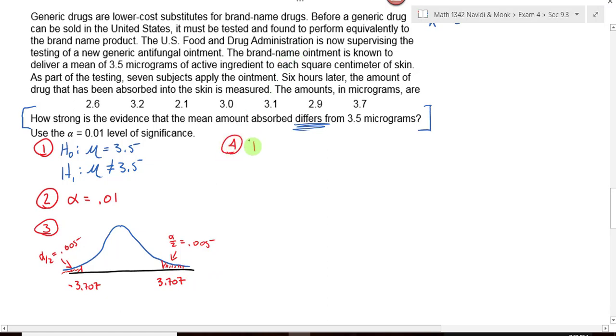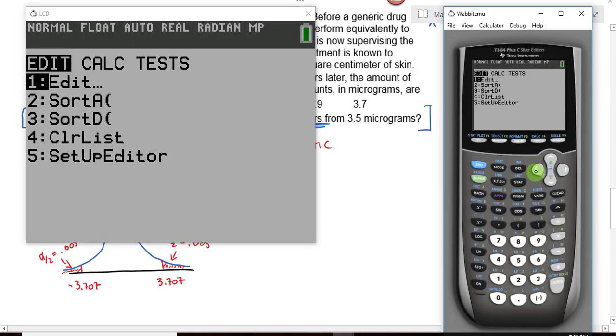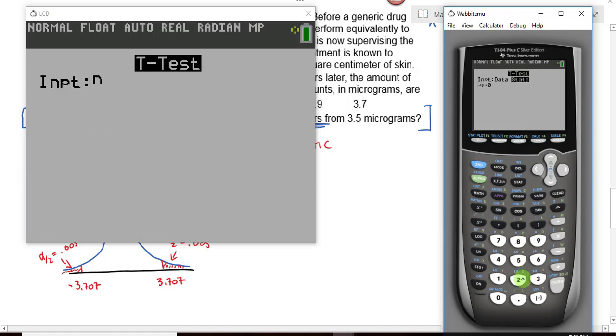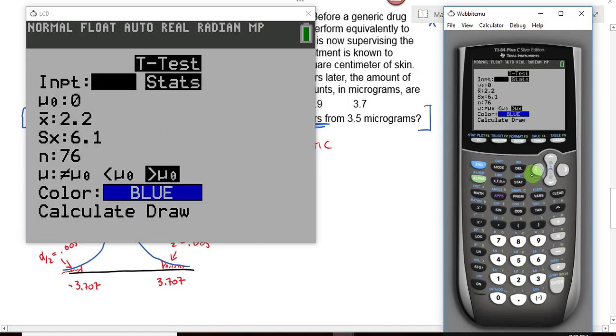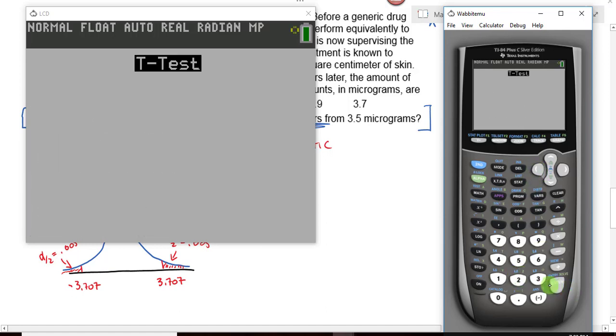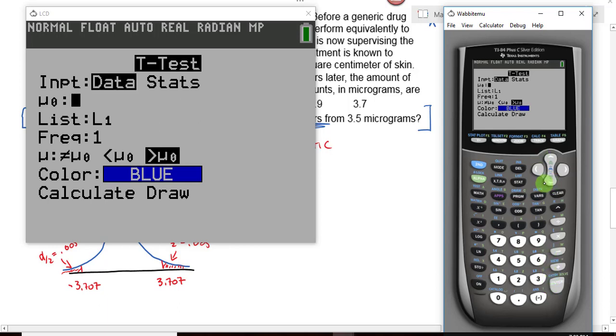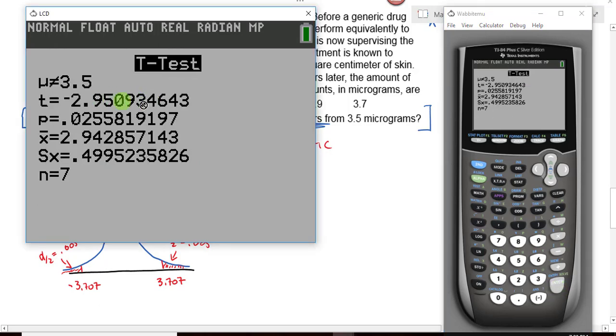Step four is to find your test statistic and your p-value. We do that by going to the calculator. So we hit stat, test. This is a t-test, so I select number two. Now I have raw data. So I highlight data, and it changes what it asked me for. What do we plug in for the value for the mean from our null hypothesis? My data is in list one, so I'm okay with that. Leave the one alone. This is a two-tailed test. So we highlight the not equal to, and then we calculate. And here is our output.